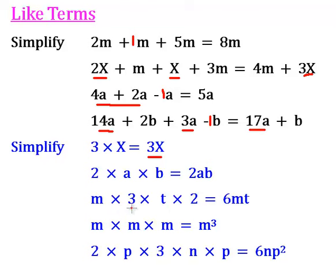m times 3 times t times 2. Multiply the numbers together first which will give us 6, times m times t, so that will be 6mt. m times m times m is m to the power 3.